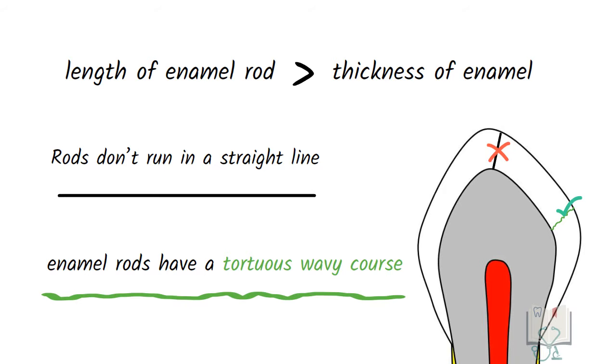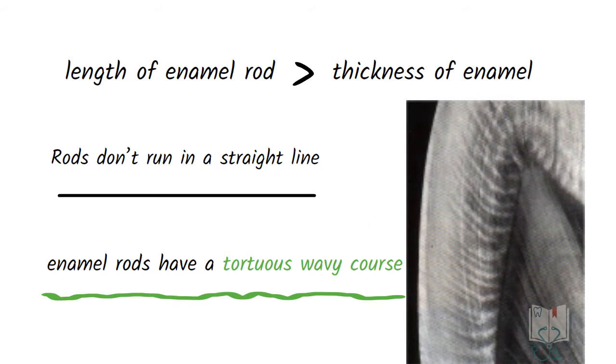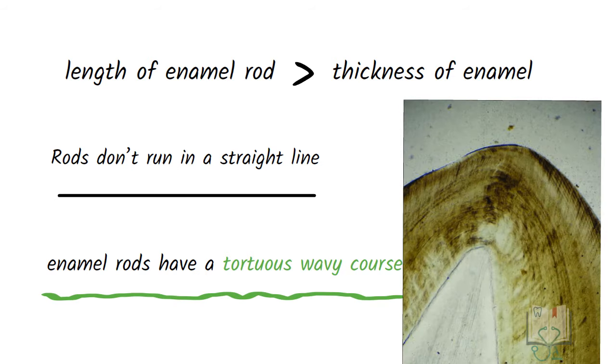This wavy course is the reason for the light and dark bands called the hunter-shagger bands. This wavy pattern gets exaggerated in the cuspal areas of teeth to form gnarled enamel.